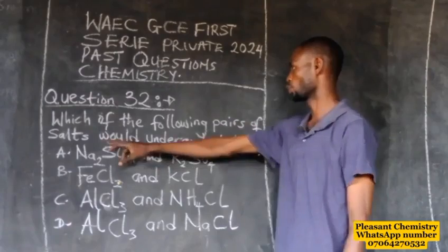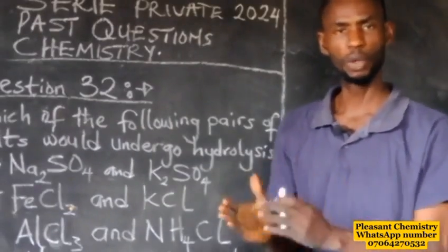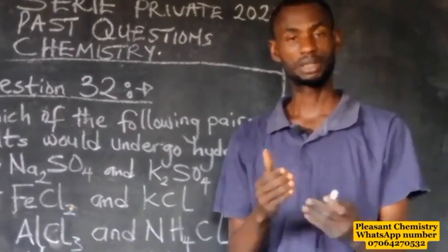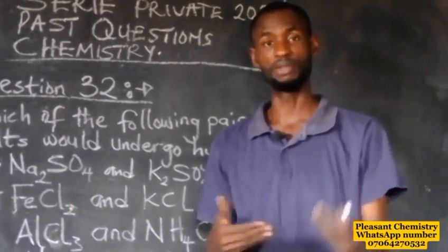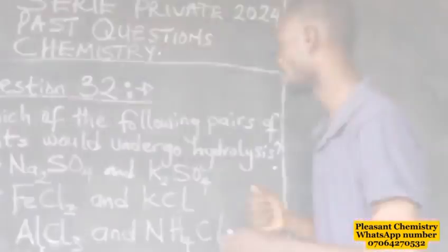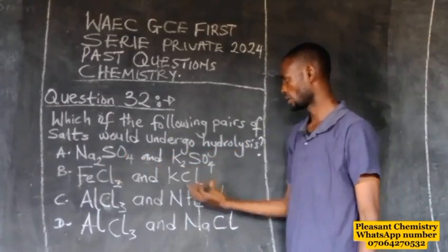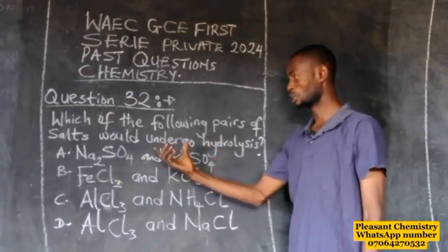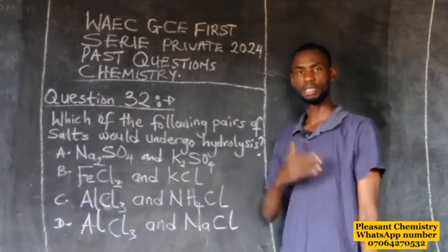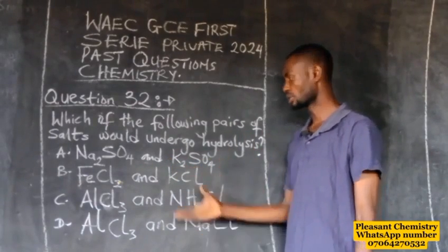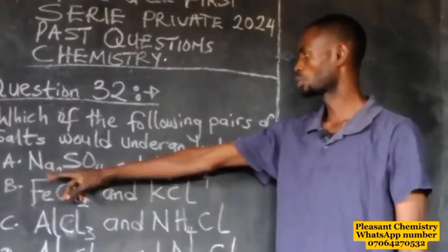Question number 32: Which of the following pairs of salts would undergo hydrolysis? Both salts in each pair must undergo hydrolysis for the answer to be correct. Let's check the first pair: sodium tetraborate and potassium tetraborate. Will these salts undergo hydrolysis? No.